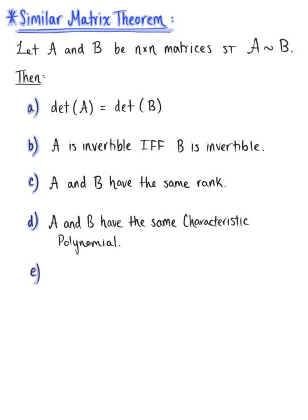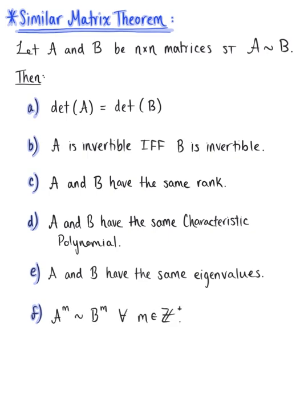Property E tells us that matrix A and matrix B have the same eigenvalues. Property F tells us that matrix A raised to the mth power is similar to matrix B raised to the mth power for all positive integers m.